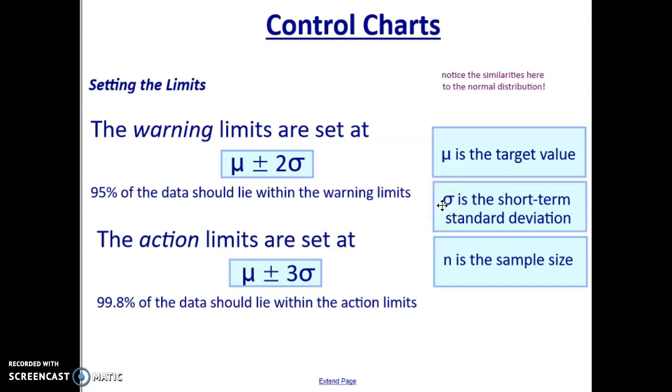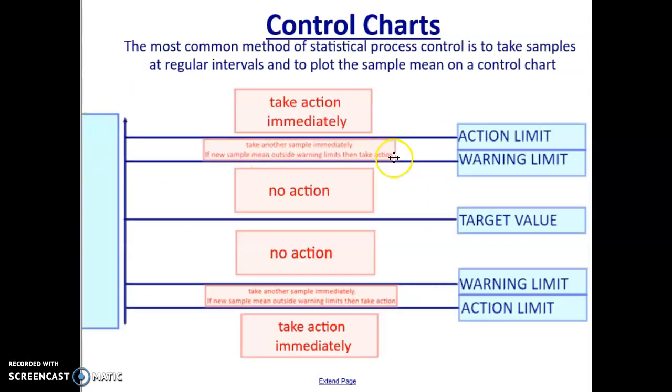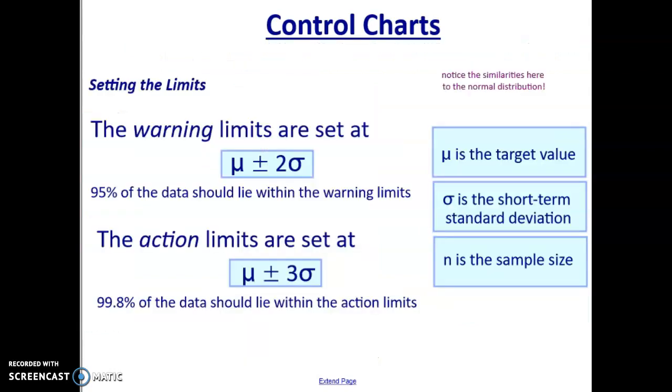Then the warning limits are mu plus minus two sigma, and then this sigma sign is the standard deviation. So again, they will probably tell you the standard deviation. So you're going to use the mean plus two standard deviations to give you that upper line. So that will give you this line here. So this is your mean, this is two standard deviations above, and this one's two standard deviations below, so plus and minus. And then the action limit is that three standard deviations. So again, I take my mean value, I add on three standard deviations, and I subtract three standard deviations.